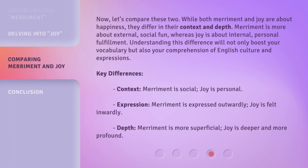Now, let's compare these two. While both merriment and joy are about happiness, they differ in their context and depth. Merriment is more about external, social fun, whereas joy is about internal, personal fulfillment. Understanding this difference will not only boost your vocabulary, but also your comprehension of English culture and expressions.